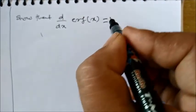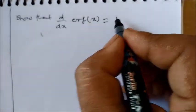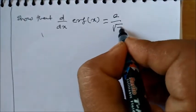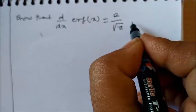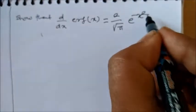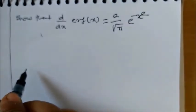is equal to 2/√π e^(-x²). Now, how do you solve this problem?